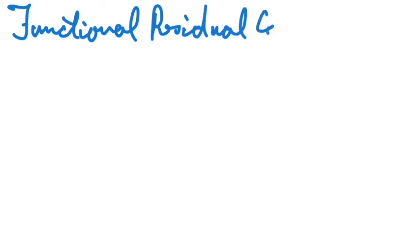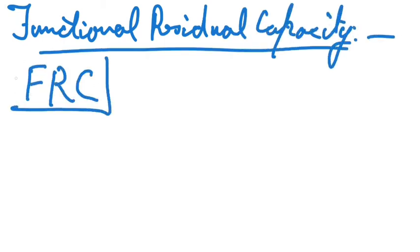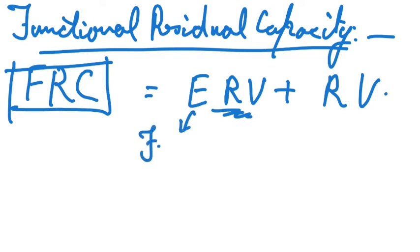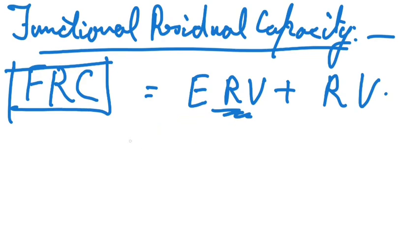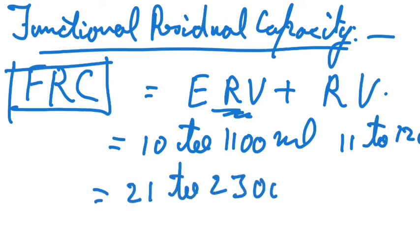Next we have functional residual capacity (FRC), defined as the volume of air that remains in the lungs after a normal expiration. This includes expiratory reserve volume and residual volume. One key difference is that expiratory reserve volume involves applying force, whereas functional residual capacity involves normal expiration without force. It comes out to be around 2100 to 3000 ml.